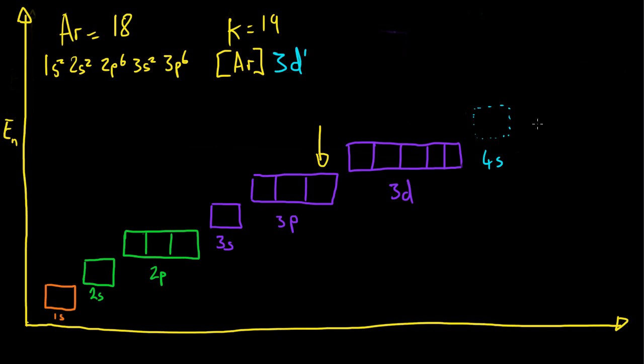But in reality, the 4s orbital isn't arranged like that. It's actually down here. So it's still at a higher energy level than the 3p orbital, but it's lower in energy than the 3d orbital. Which means it's not 3d1, but it's 4s1, because the electrons fill them in increasing energy order.